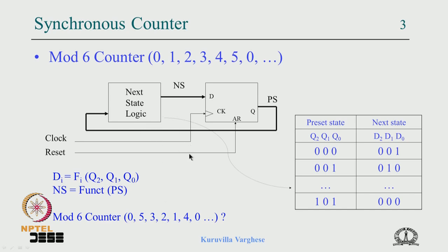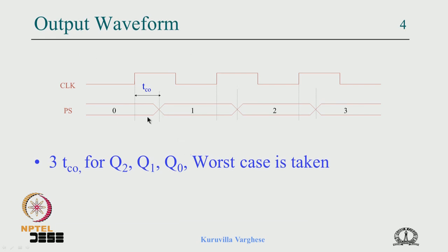We looked at the output waveform: the count changes upon the clock, but not immediately — there is a clock-to-output delay of the flip-flop. With 3 bits there are 3 delays for q2, q1, q0, and we represent the worst-case delay. You should also know that the transition from 1 to 2 may not be smooth — since 1 is 001 and 2 is 010, there could be a transitory state 3 for a brief duration. When you simulate you can see this, though it is difficult to say practically whether it will happen.